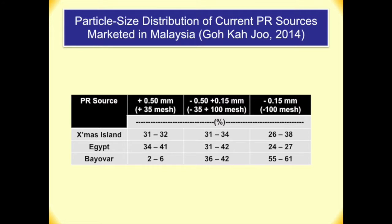In Malaysia, I found that different sources have different particle size distributions. Data provided by Mr. Goga Choo this year shows Christmas Island particle size in a certain range. Egypt has a low amount in the coarse texture fraction. Biova shows that almost all passes through 35 mesh, with only 2–6% in the majority of that size range. So different particle size distributions across sources can be problematic for solubility measurement.